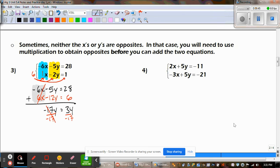Is the Y by itself? Nope. So we're going to divide both sides by negative 17, and what does Y equal? Yeah, Y equals negative two.